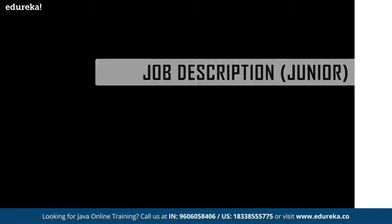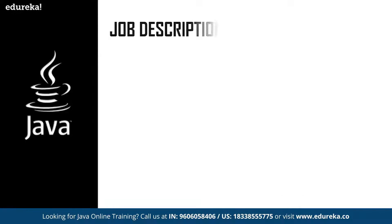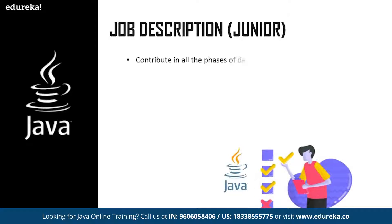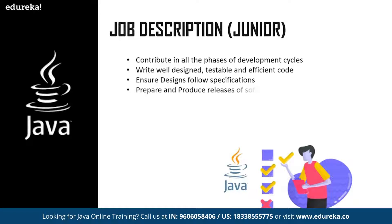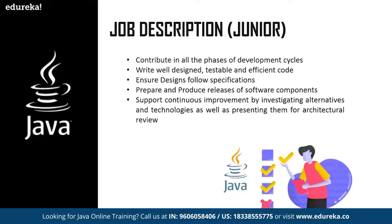The job description for a junior Java developer includes: contributing to all phases of the development cycle, writing well-designed, testable, and efficient code, ensuring designs follow specifications required by the end user, preparing and producing releases of software components, and supporting continuous improvement by investigating alternatives and technologies and presenting them for architectural review.